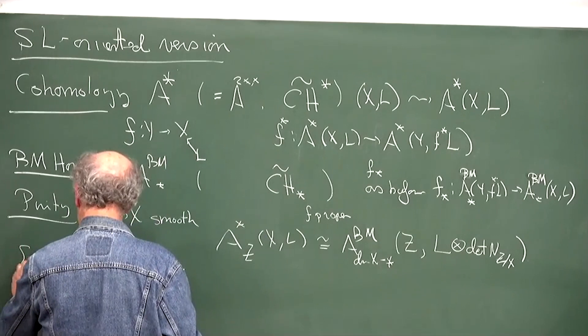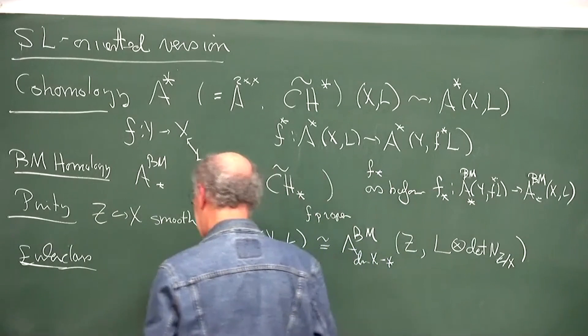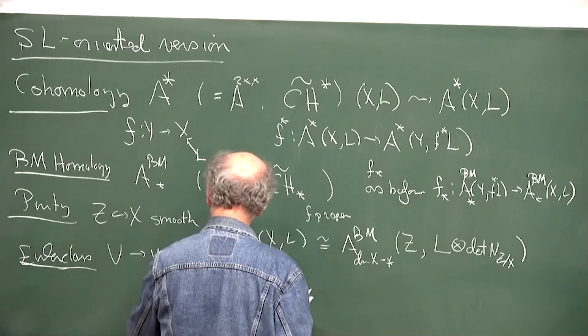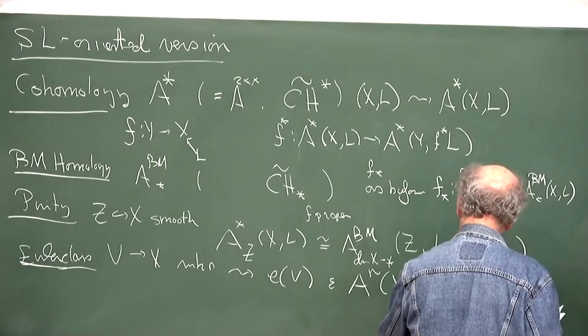There's another difference: instead of having all Chern classes in all degrees, you just have the analog of the top Chern class. So if you have V on X of rank R, then you get its Euler class, twisted by the inverse of the determinant of V.